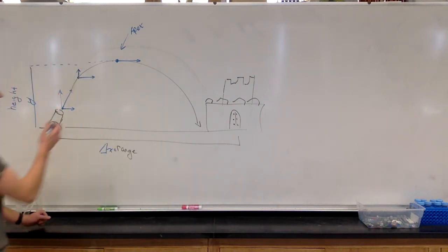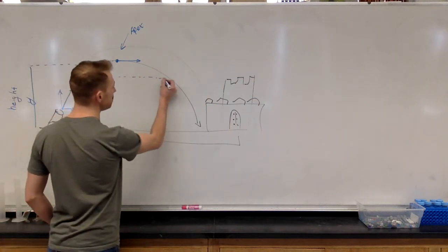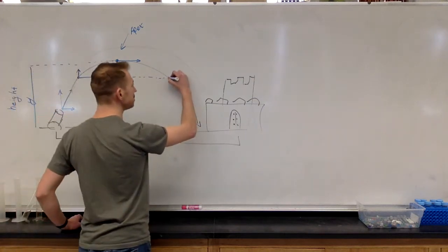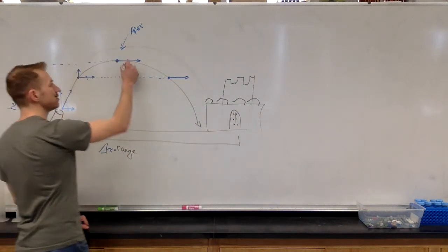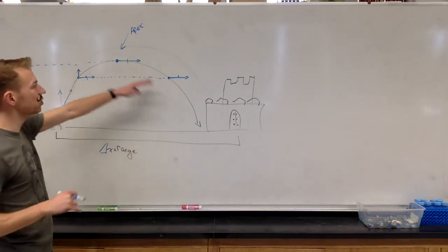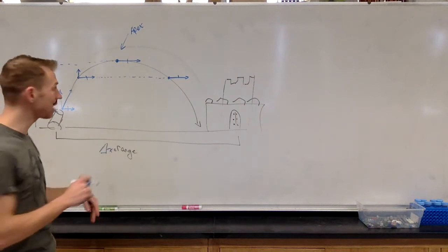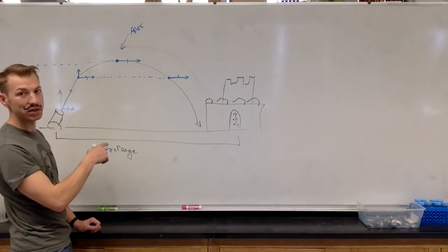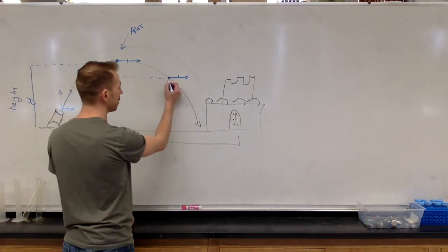Then, strangely enough, on the opposite side, it will be exactly mirrored, where the horizontal velocity will be the same. All of these, I'm trying to draw the arrow the same, but I'm not very good at it. So all of these horizontal components of this parabolic arc are the same, and the vertical components are the ones that are changing, but exactly opposite on the parabolic arc.